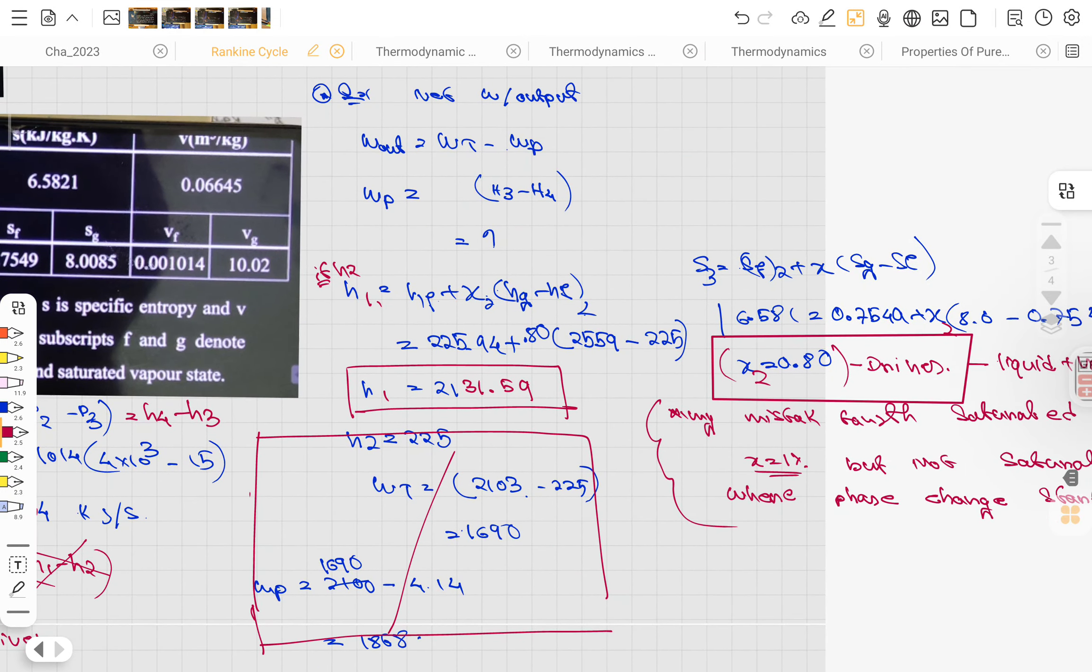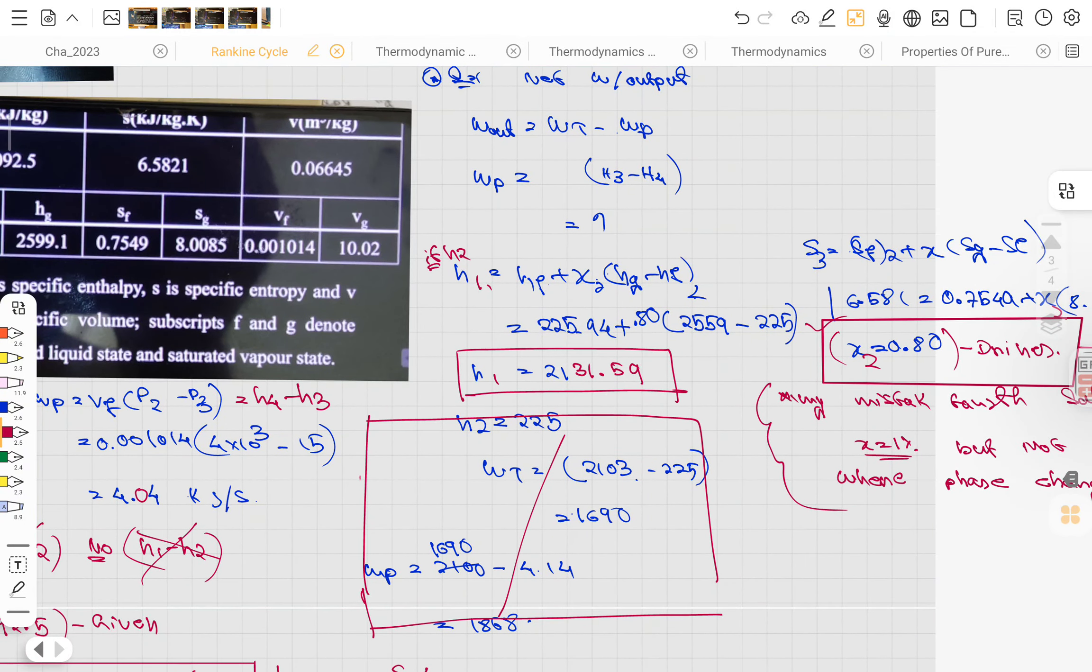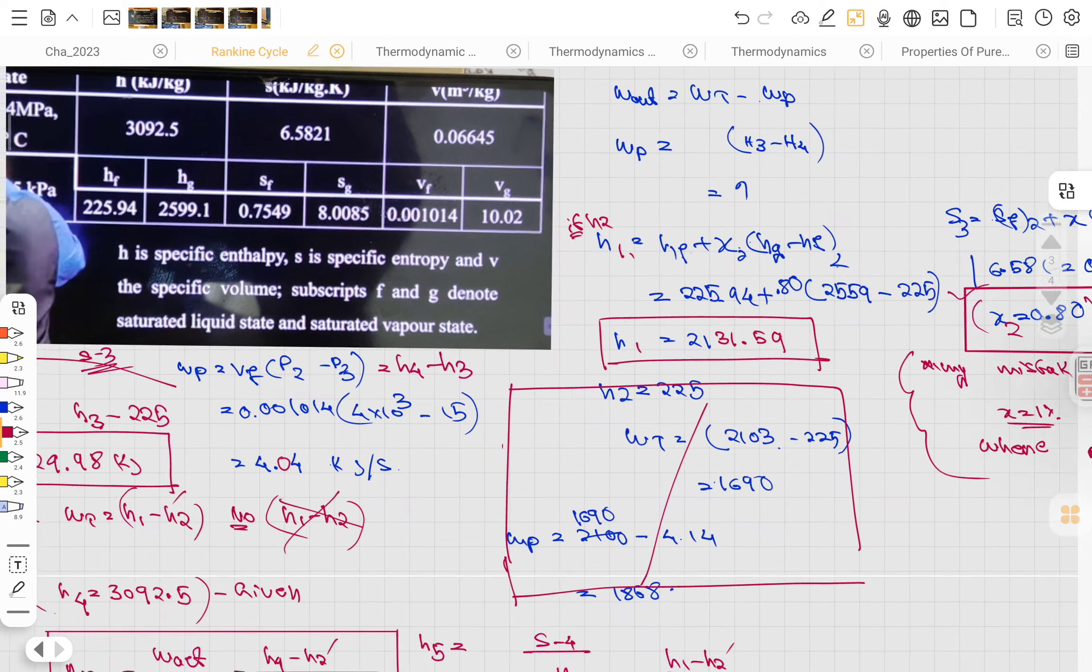You need to find out the dryness fraction. Then h1 - we're not getting h4. h1 is given in the table also, and from there we are getting the h1 value.